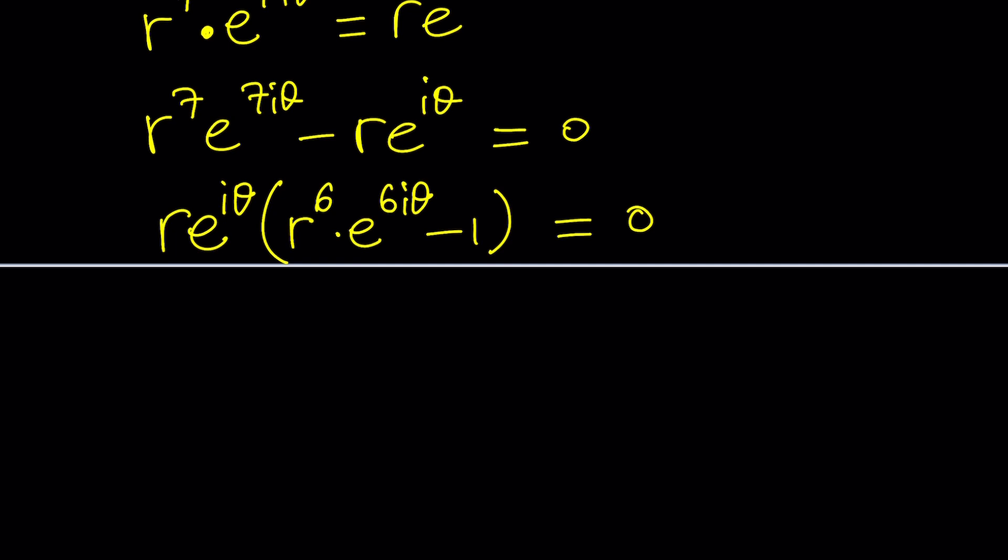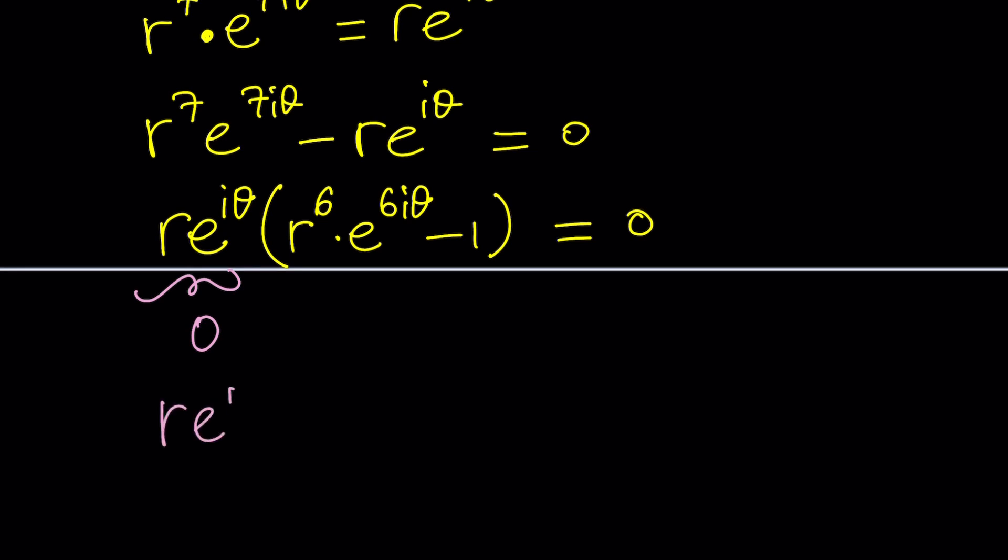From here, I'm getting two things. This can be zero or the other can be zero. This means r e to the i theta is zero. Obviously e to the i theta can never be zero, even when theta is zero or even complex, so r has to be zero. R equals zero implies z equals zero.